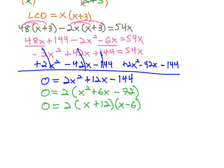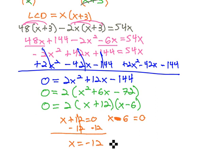And then we can set each factor equal to zero. x plus twelve equals zero and x minus six equals zero. And solve quickly by subtracting twelve and adding six. To find x is equal to negative twelve and six.